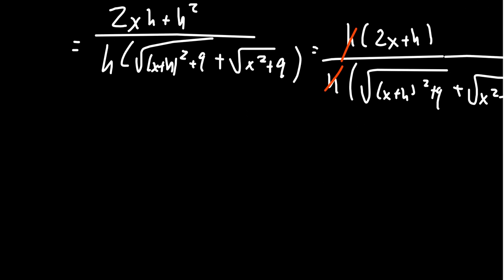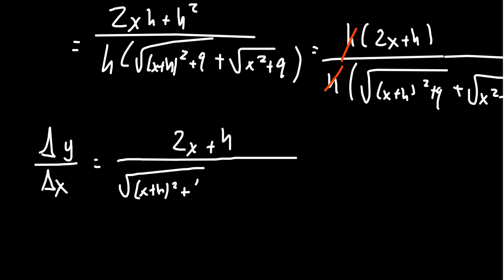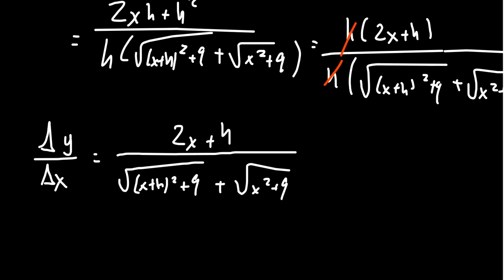For which then we're now ready to specify the simplified average rate of change, delta y over delta x. This is then equal to 2x plus h above the square root of x plus h squared plus 9 plus the square root of x squared plus 9. This gives us our average rate of change.